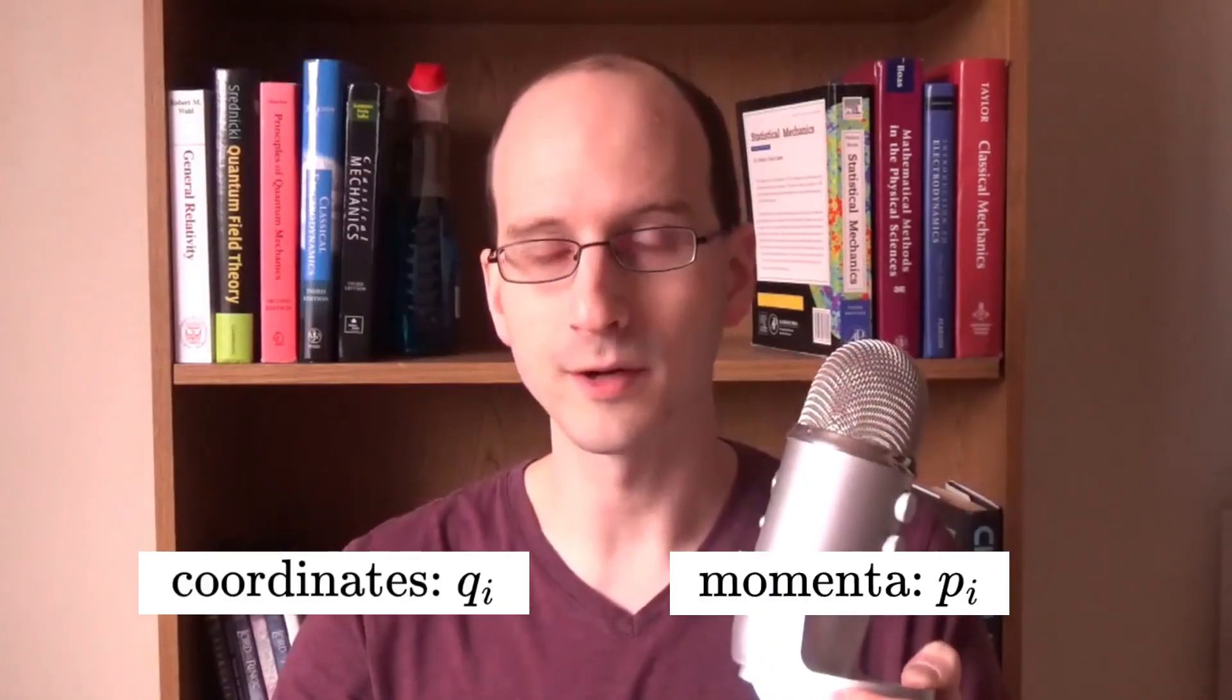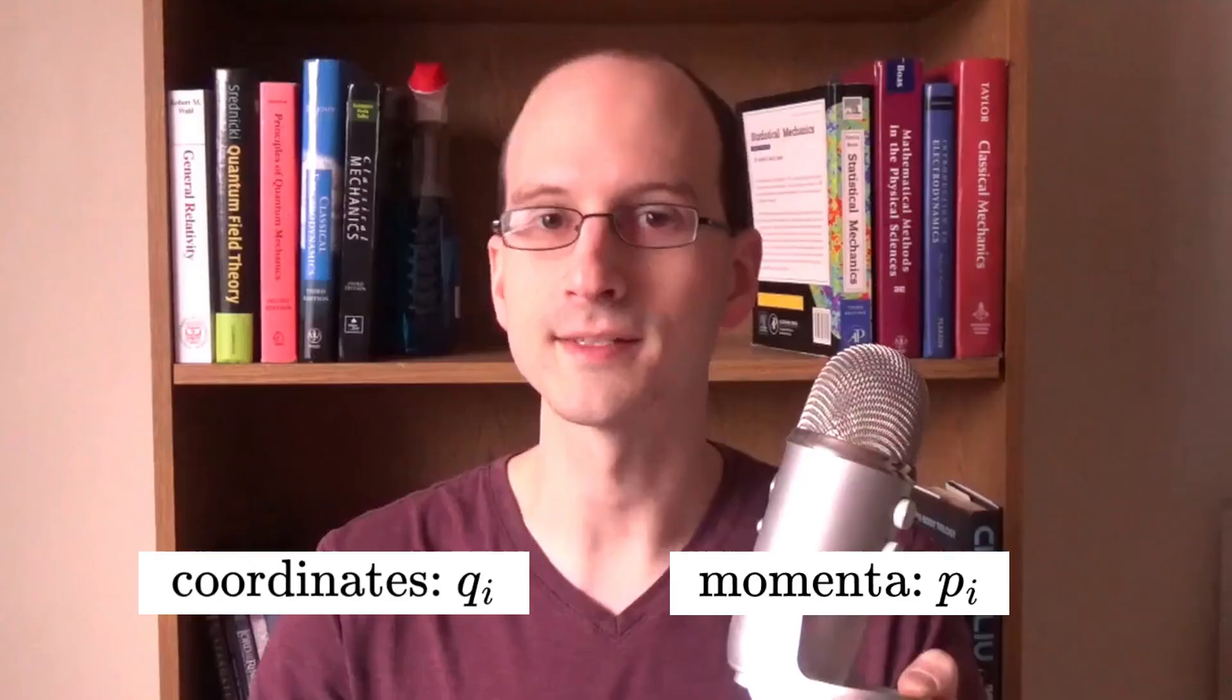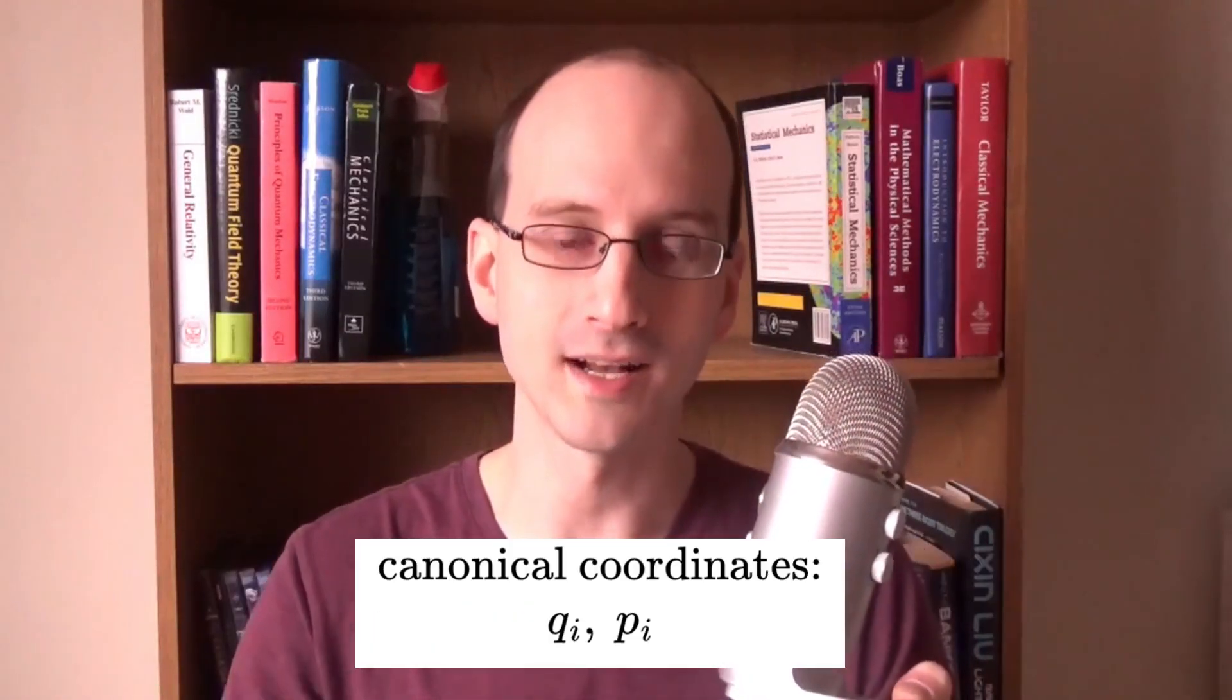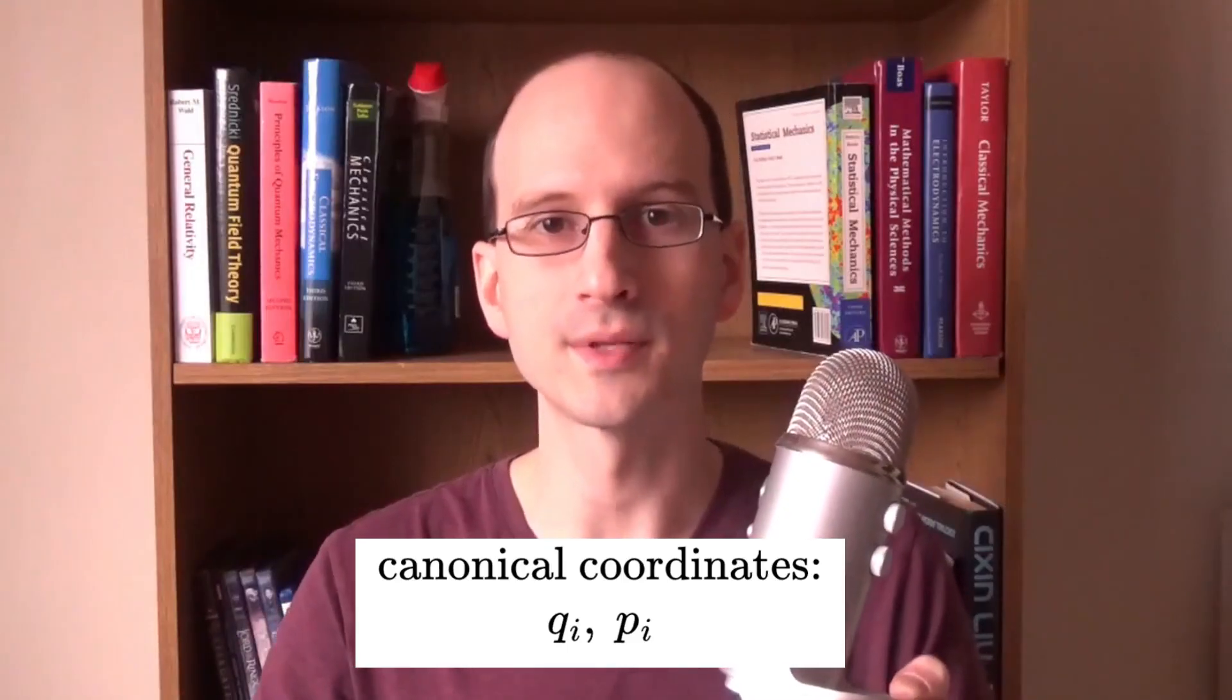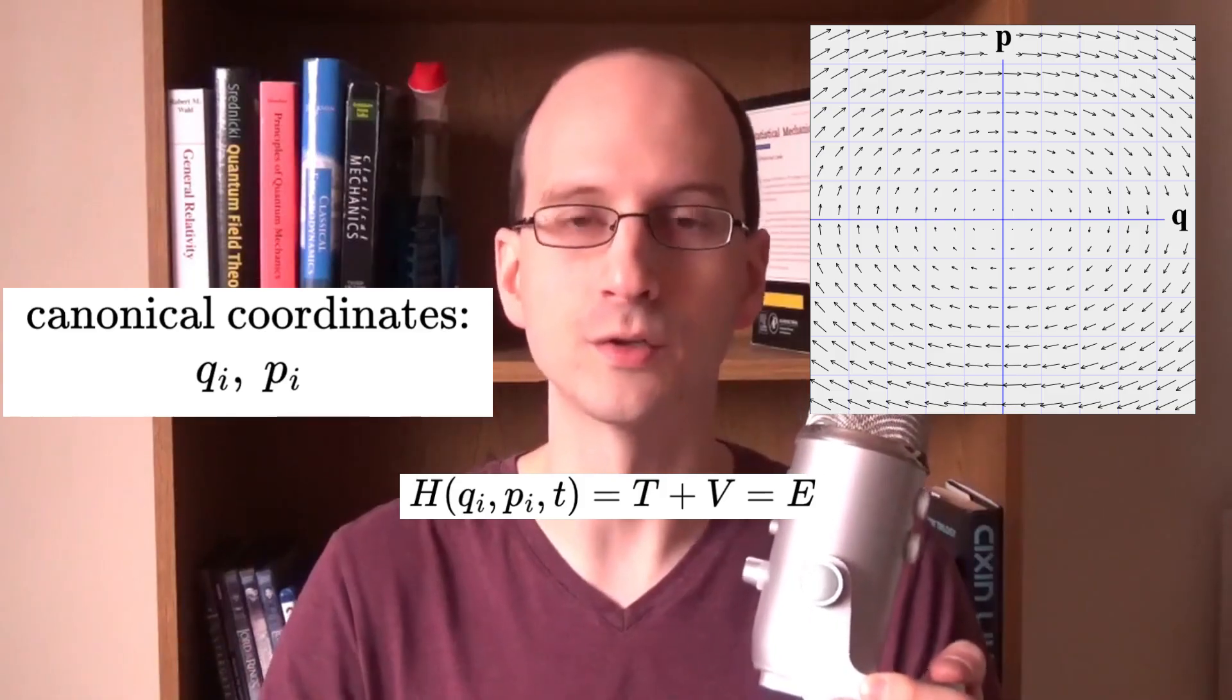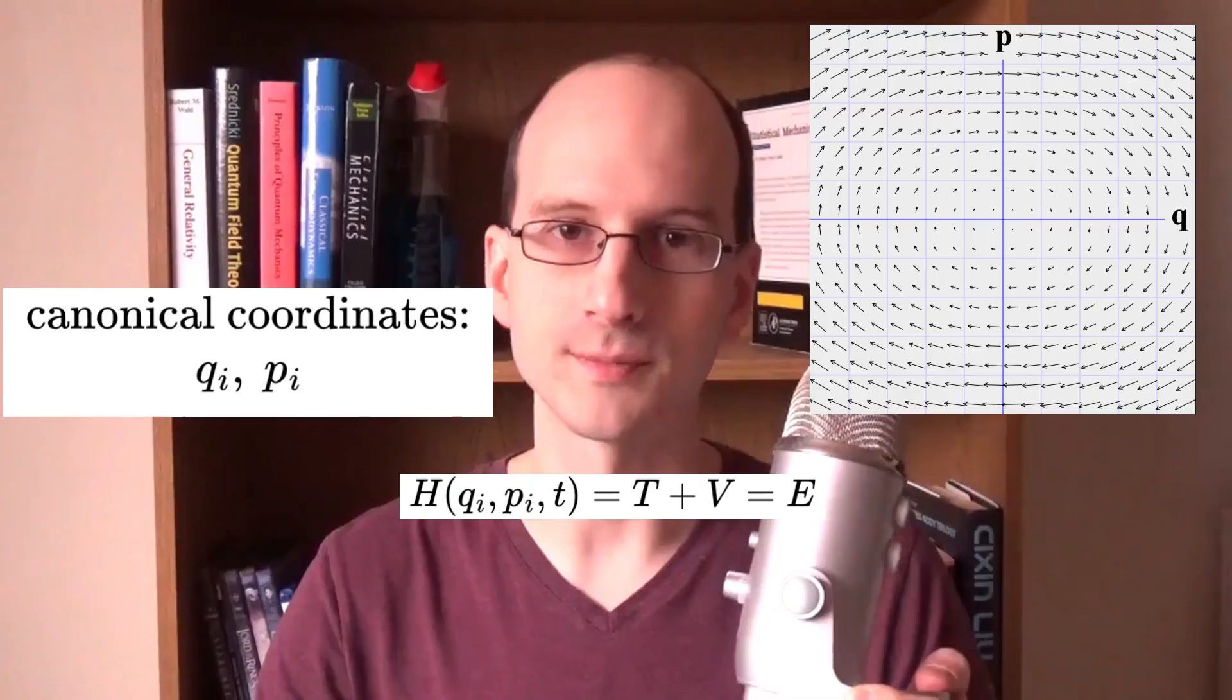Last time, we looked at how to describe physical systems with descriptive variables and their weighted rate of change, or coordinates and momenta. Together, these coordinates and momenta are called canonical coordinates, and they make up a system's phase space. A system's Hamiltonian is a function of its canonical coordinates, and it's usually the total energy, kinetic plus potential.